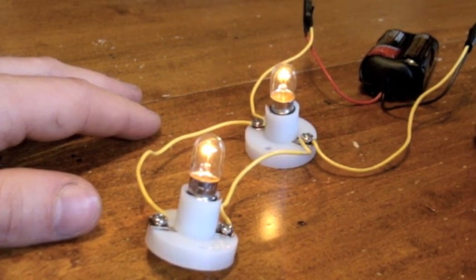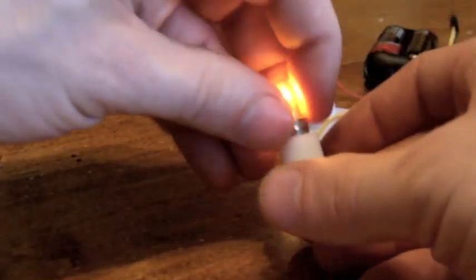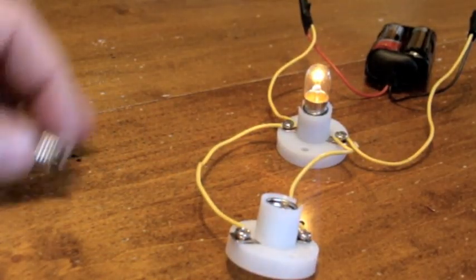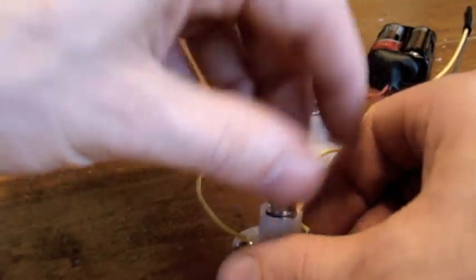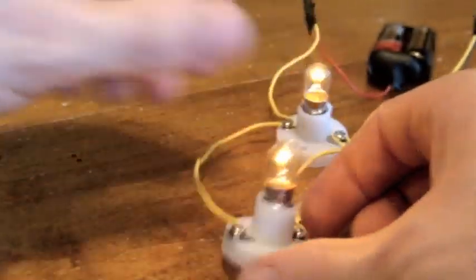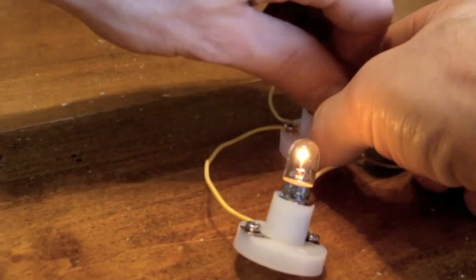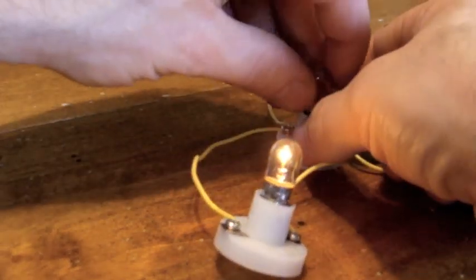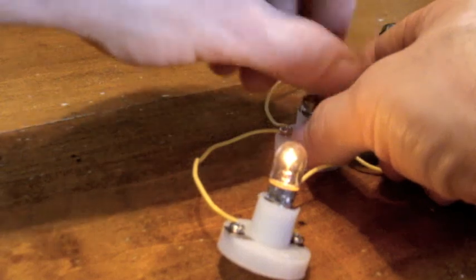Now watch as I remove one of the light bulbs. If I did this on a simple circuit, the other bulb would die. But with a parallel circuit, the other one still has a flow of current so it can still work. That is one of the major benefits of a parallel circuit.